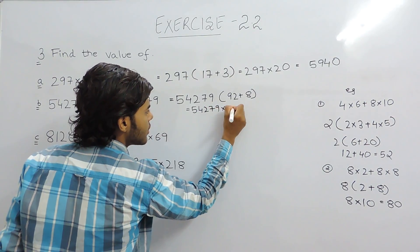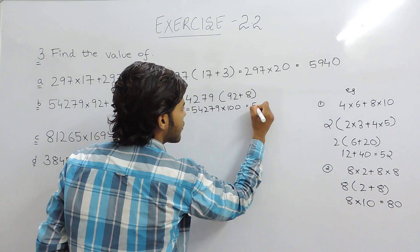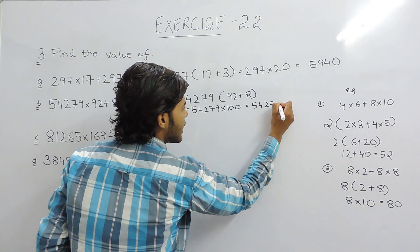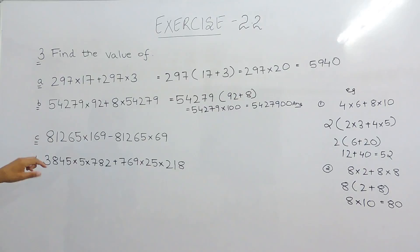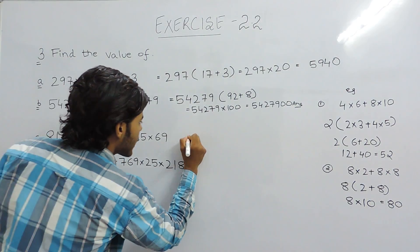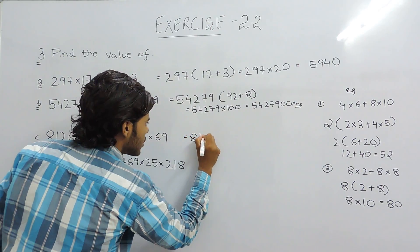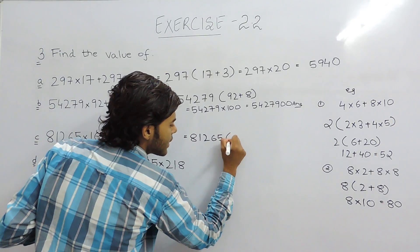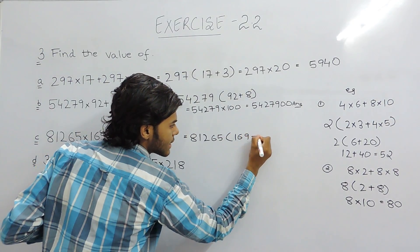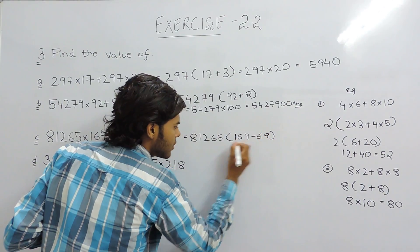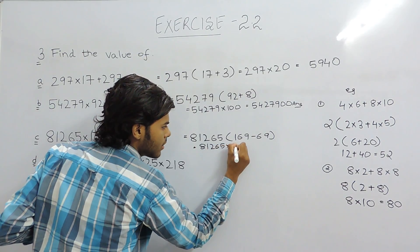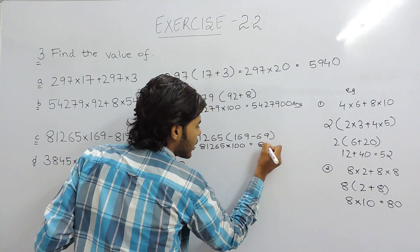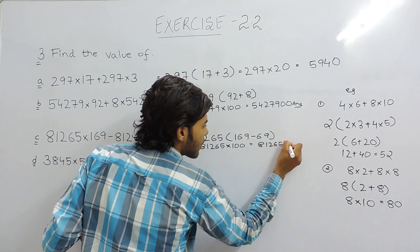So the answer will be 54279×100 = 5427900. In the third part, 81265 appears on both sides, so we can take it out as common. Inside the bracket there remains 169 − 69, which gives 100. So it will be 81265×100 = 8126500.